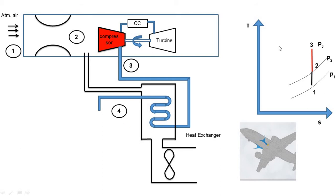For the TS diagram, the constant pressure line is drawn as a curve. Point 4 is on the P3 constant pressure line, moving down and to the left because temperature is reduced and entropy is reduced. This is process 3 to 4.